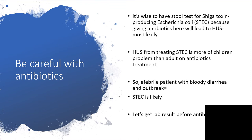Hemolytic uremic syndrome from treating Shiga toxin-producing E. coli is more of a children's problem than an adult problem. Adults will have thrombotic thrombocytopenic purpura. So if a patient is febrile but having bloody diarrhea and there's an outbreak, we still have to wait — this is likely a STEC situation. In that case, get the lab done before administering antibiotics. Don't give antibiotics yet if you're suspecting Shiga toxin-producing E. coli. Hold it, get the lab done, let it be established or ruled out, and then do whatever is appropriate.